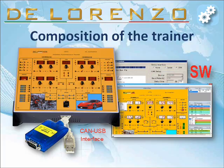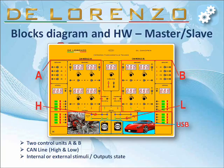The DL CANOPEN trainer is composed of a module with synoptic, a CAN-USB interface, and a software package for analyzing and programming. The system consists of two units: a programmable master, Module A, and a full CANOPEN slave, Module B, with their USB ports to connect to a PC.